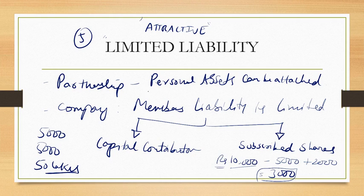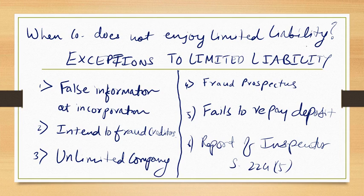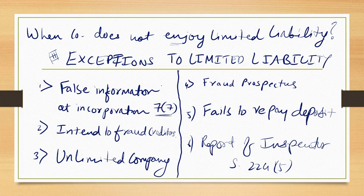However, there are exceptions where a company cannot enjoy limited liability. The first exception is when there is false information at the time of incorporation — if you give wrong documents, liability becomes unlimited as per Section 7 sub-section 7. The second exception is if the company is intending to defraud creditors, you cannot enjoy limited liability.